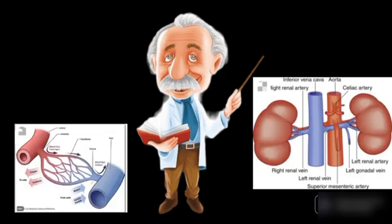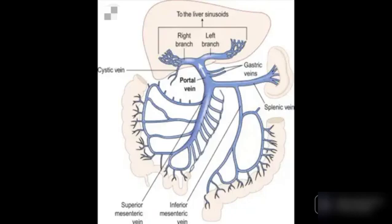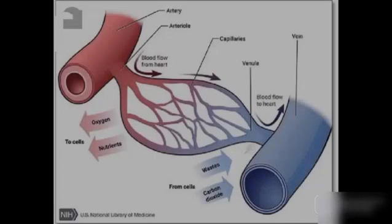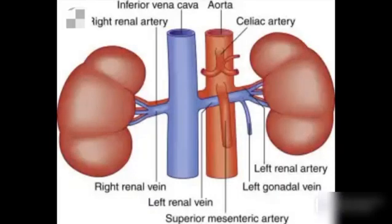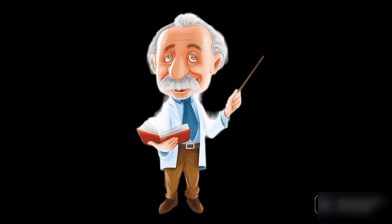Veins have accessory structures called capillaries. Capillaries are tiny blood vessels — so tiny that a single red blood cell can barely fit through them. They connect arteries and veins, and they facilitate the exchange of materials between the blood and the tissues.